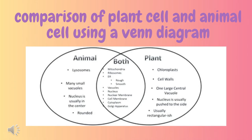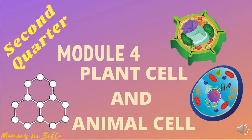Comparison of plant cell and animal cell using a Venn diagram. You can see here the parts present in animal cell only, the parts present in plant cell only, and the parts common to both plant cell and animal cell. That concludes module 4 on plant cell and animal cell. If you have any questions, don't forget to send a message to your science teacher. Don't forget to subscribe to our channel. Goodbye!